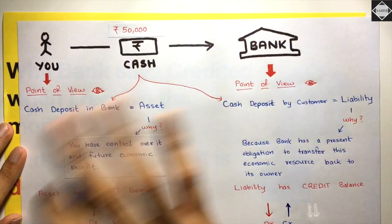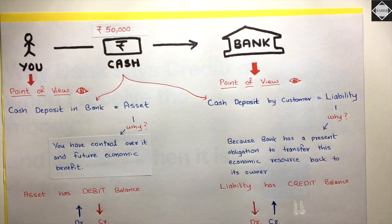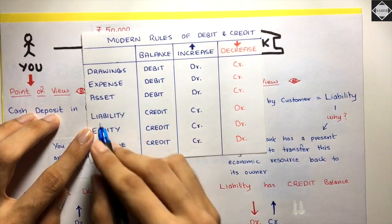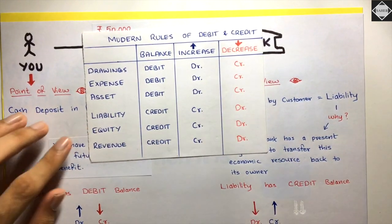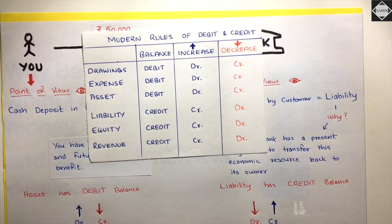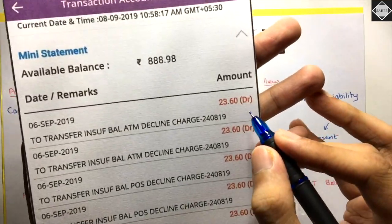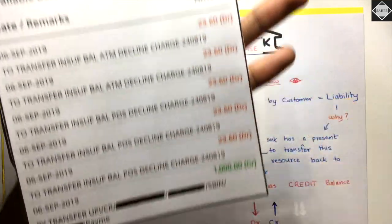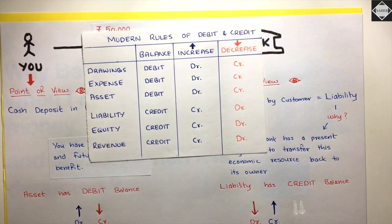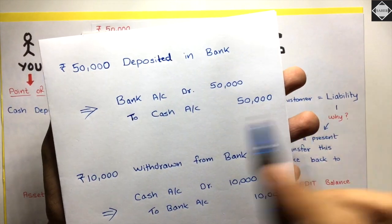Since it's a liability, it has a credit balance. So the rules are opposite: asset has debit balance, liability has credit balance. That is why whenever money increases in your account, the bank says 'credited,' and whenever money decreases, the bank says 'debited' — because from the bank's point of view, your deposit is a liability, not an asset.